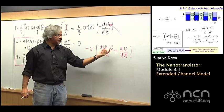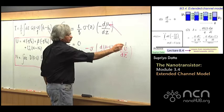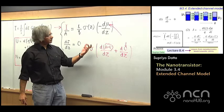So sometimes d mu / dZ could be written separately as (mu minus U) and U. This is what you call the electrochemical potential; this would be more like the electrostatic potential; and this is what you might call the chemical potential.